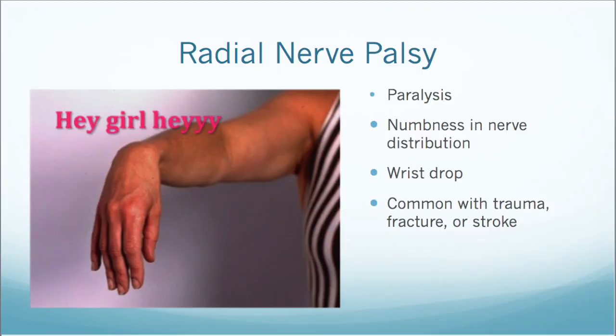With radial nerve palsy, some common symptoms are, of course, paralysis of the wrist and digit extensor muscles and forearm supinator muscles. There will also be numbness within the nerve distribution on the dorso-radial aspect of the hand and the radial three-and-a-half fingers. The most common sign, however, is wrist drop, which is pictured here, and it is commonly found with trauma, a fracture, or in stroke victims.